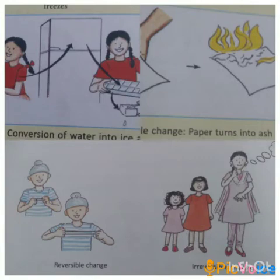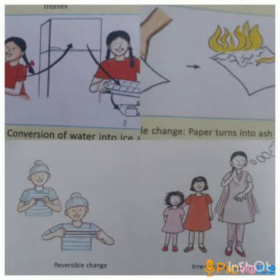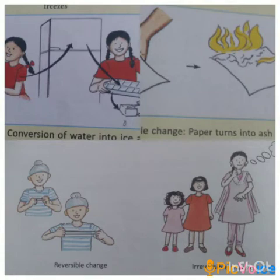The next type of changes are reversible and irreversible changes. A reversible change is a change in which the substance produced can get back to its original form. It is a temporary change which can be reversed when the cause of the change is removed. Examples include freezing of water, evaporation, stretching of rubber strings, and switching a light on or off. When we remove the cause of change in all these cases, we get the substance back in its original form.